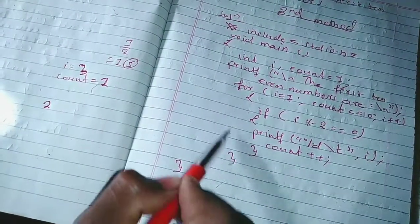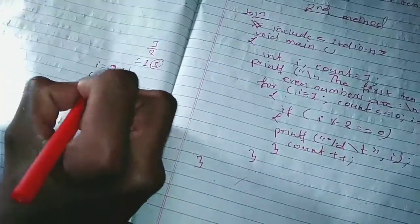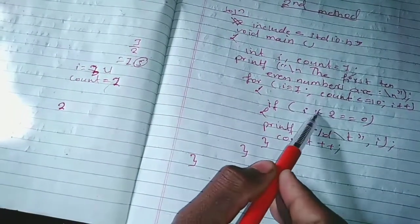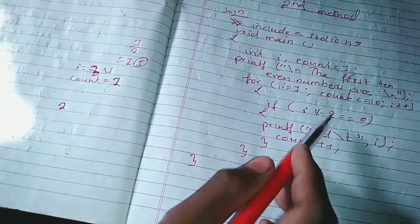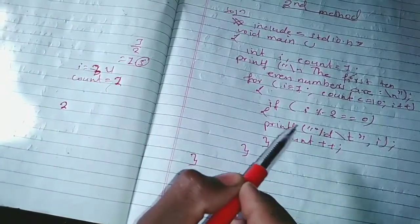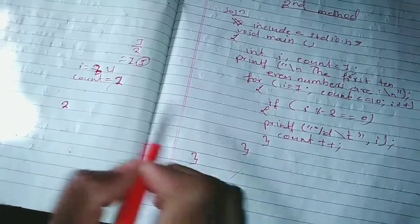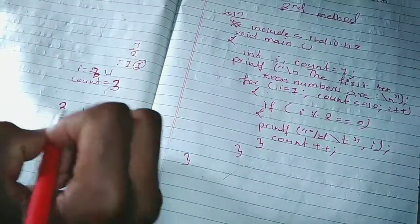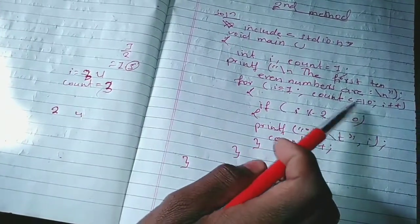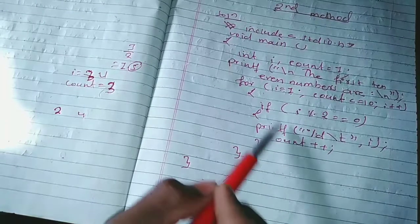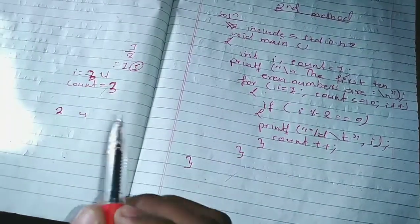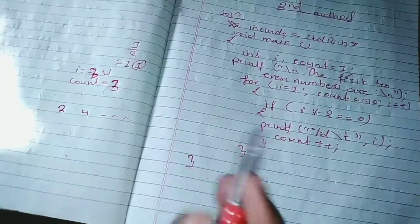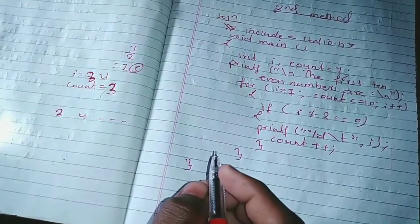The loop continues and i becomes 4. Since 4 % 2 equals 0, the condition is true, so printf prints 4 with a tab, and count becomes 3. By this process, until count is less than or equal to 10, the same logic repeats and we get the first 10 even numbers. So using these two ways you can display the first 10 even numbers. Thank you guys for watching, namaste.